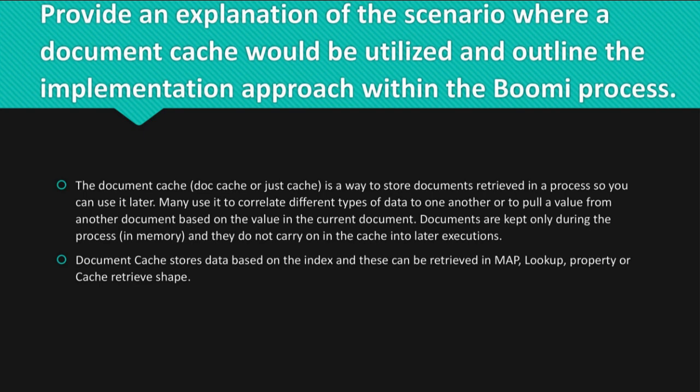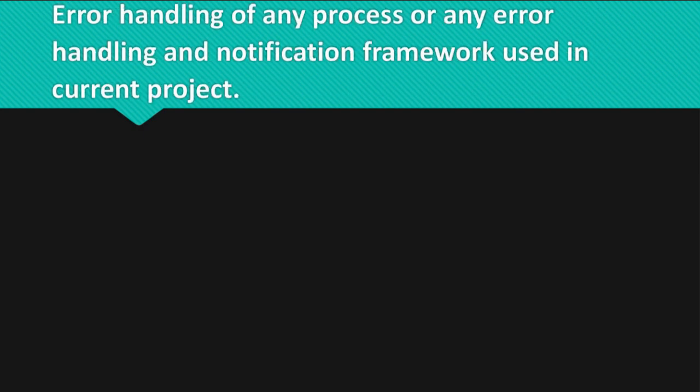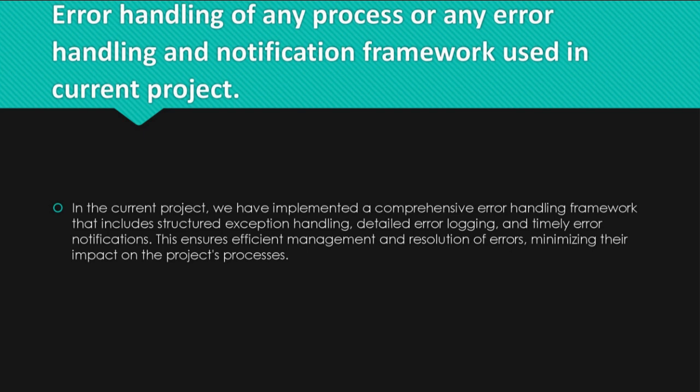Document cache stores data based on the index, and these can be retrieved in a map, lookup, property, or cache retrieve shape. Question: Error handling of any process, or any error handling and notification framework used in the current project. Answer: In the current project, we have implemented a comprehensive error handling framework that includes structured exception handling, detailed error logging, and timely error notifications. This ensures efficient management and resolution of errors, minimizing their impact on the project's processes.